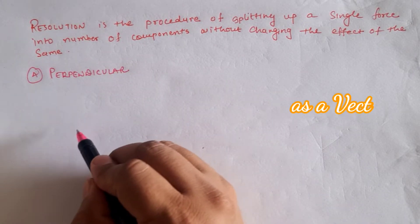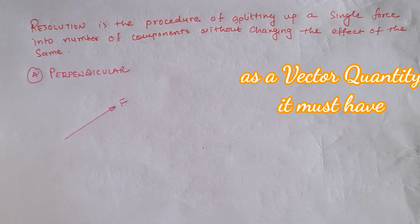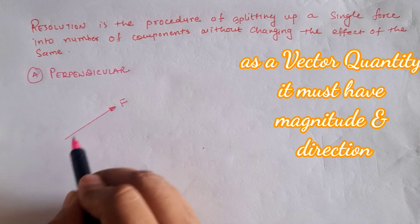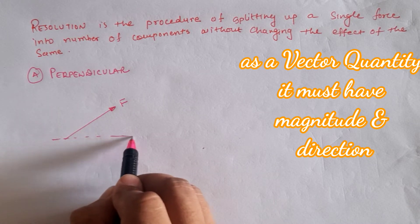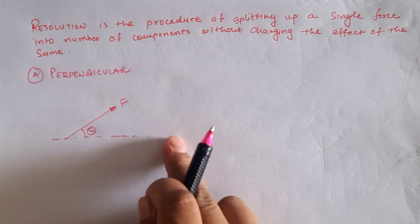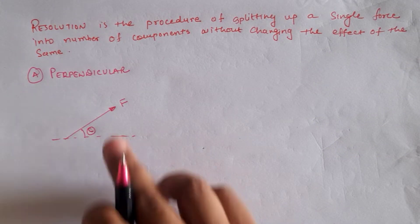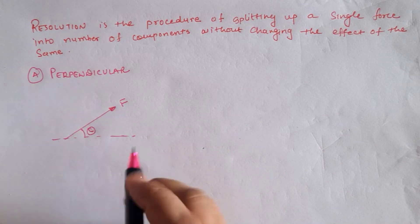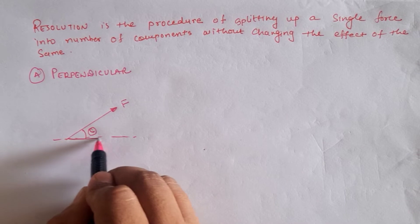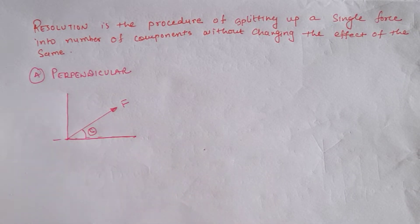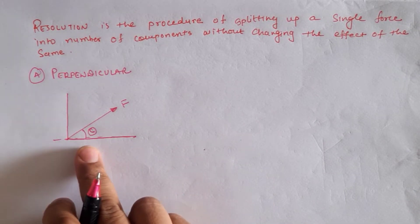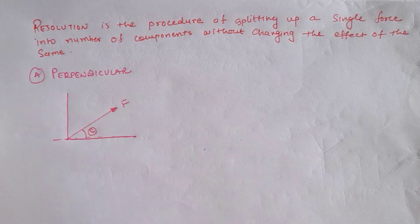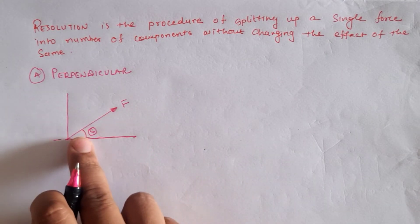In perpendicular resolution, if we have a force of magnitude F at angle theta with the horizontal axis, then this force is split into two components which are mutually perpendicular to each other. One component is the horizontal force and another is the vertical force, and we must not change the effect of the original force.